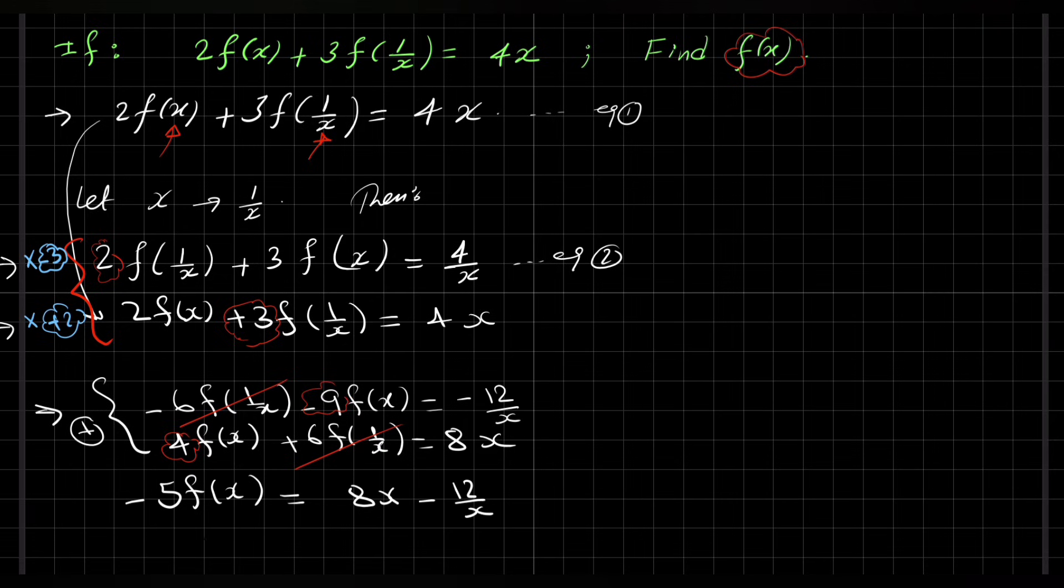So to get f(x), we divide by negative 5, so f(x) equals minus 8x over 5 plus 12 over 5x.